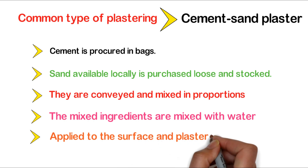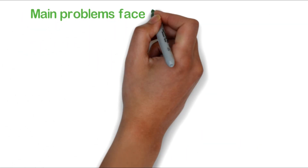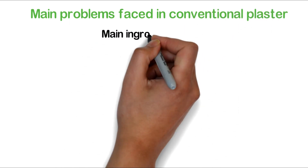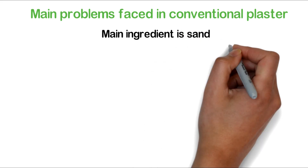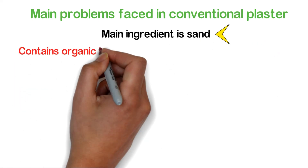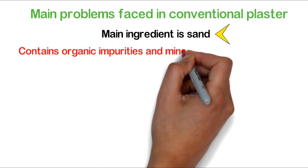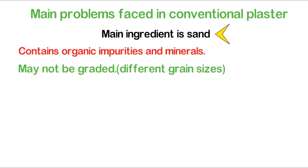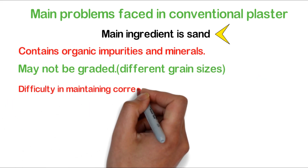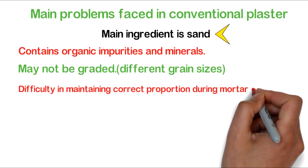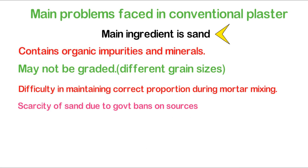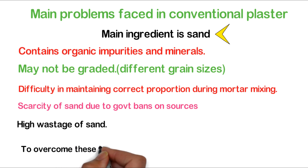What are the main problems faced in conventional plaster? The main ingredient, sand, contains organic impurities and minerals, and may not be graded. There is difficulty in maintaining correct proportions during mortar mixing at site. There will be scarcity of sand due to government bans on sources, and there will be high wastage of sand. To overcome these issues, ready mix plaster is introduced.